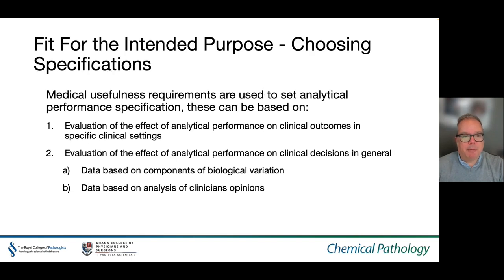The gold standard medical usefulness requirements, which are set to define analytical performance specifications, can be based on the evaluation of the effects of analytical performance on clinical outcomes in specific clinical settings — this is the gold standard and should be used wherever possible. However, it is not always possible to access that data, and the evaluation of the effects of analytical performance on clinical decisions in general can be based on data obtained from components of biological variation or data based on the analysis of clinical opinion.